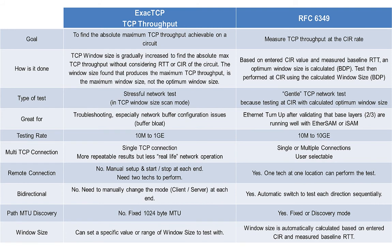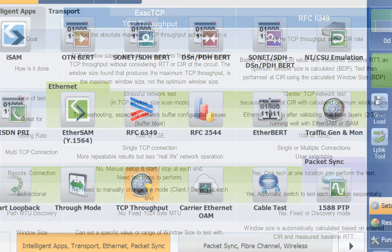RFC 6349 test reports include clear pass/fail indications along with graphical information about the ideal and measured TCP throughput for each window size. The RFC 6349 test is much gentler than ExactTCP — it tests to BDP rather than to maximum achievable TCP throughput. Each application has a specific goal: ExactTCP finds the maximum TCP throughput by stressing the circuit to its limit, making it a great tool for finding incorrect input buffer configurations and buffer bloat, while RFC 6349 measures TCP performance at CIR, providing ideal versus actual throughput and an overall TCP health indication — ideal for service providers at circuit turn-up time.